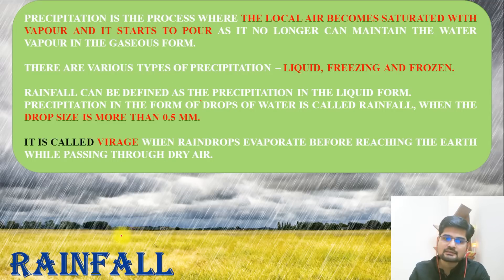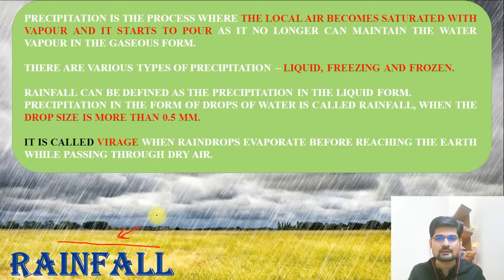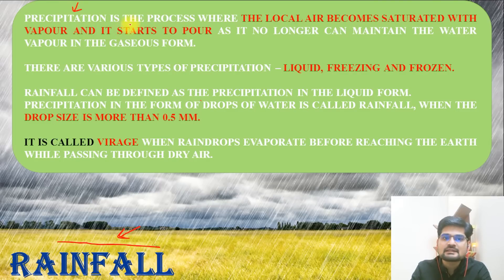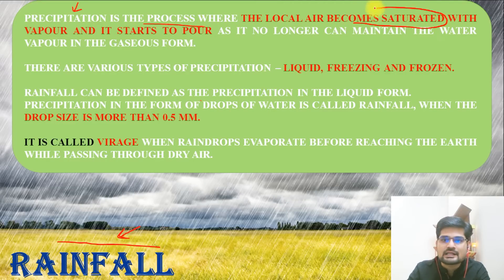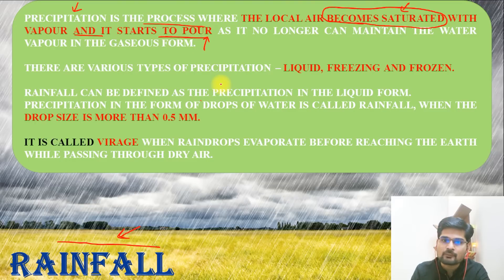After discussing clouds and their various types and family in the last session, let's understand the forms of precipitation — specifically rainfall, its distribution, and its various types. Precipitation is the process where local air becomes saturated with water vapor and starts to downpour, which is what we know as rainfall.